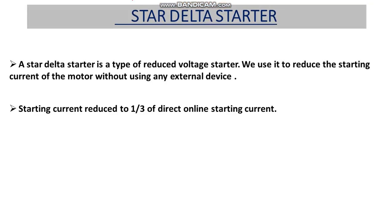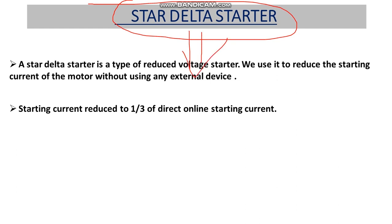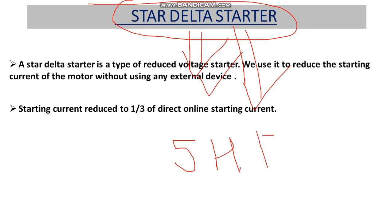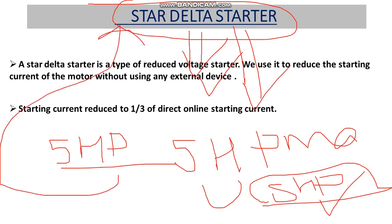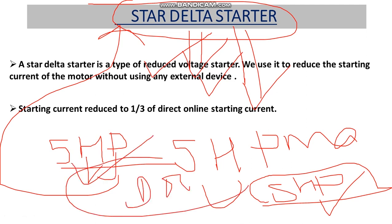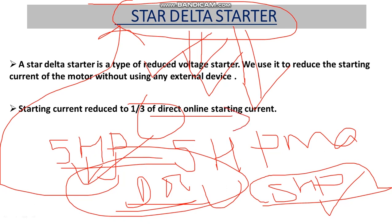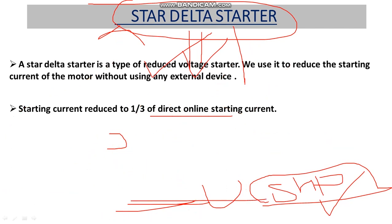A star delta starter is a three-phase induction motor starter. It is generally used for motors rated above 5 HP. For motors below 5 HP we go for a DOL starter, which we already discussed in a previous video — the link is in the description box.